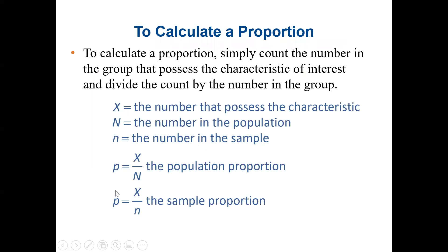Here we have some variables. Let uppercase X represent the number that possesses the characteristics. Then uppercase N will be the number in the population - that would be the total population, and X would be the frequency or the number of persons or any item that possesses the characteristics that we are looking for. Then lowercase n will be the number in the sample size.